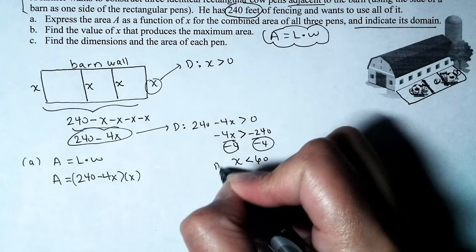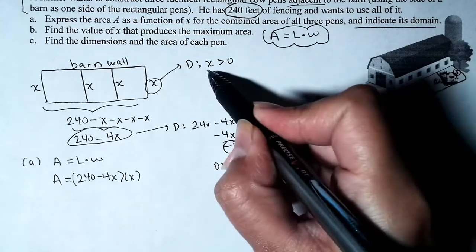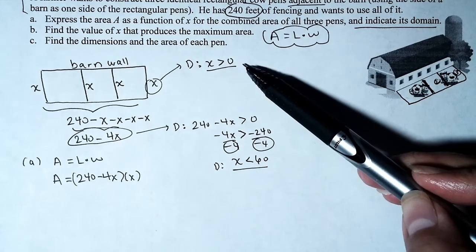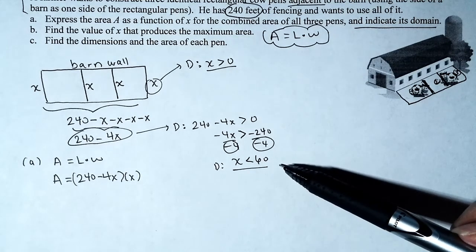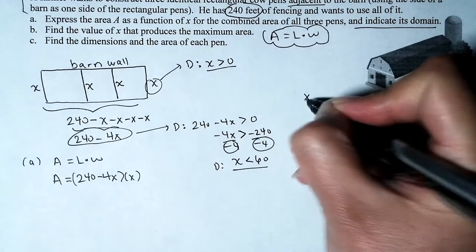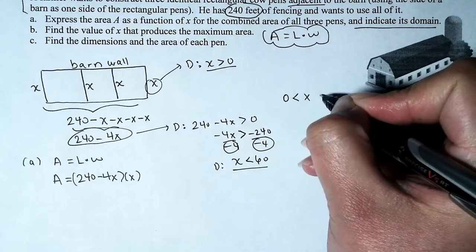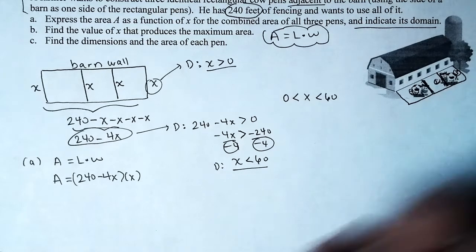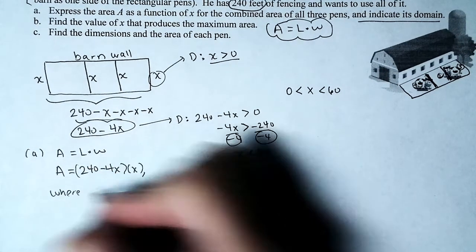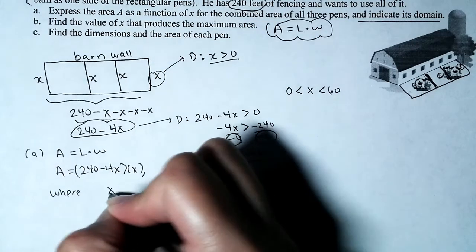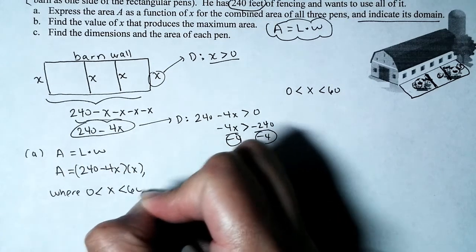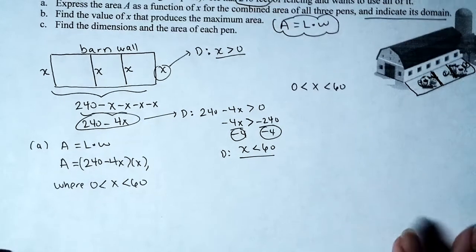So the domain is: x is greater than zero and less than 60. In other words, x is between zero and 60. That completes Part A.